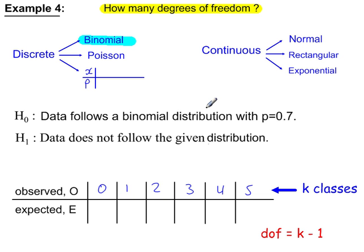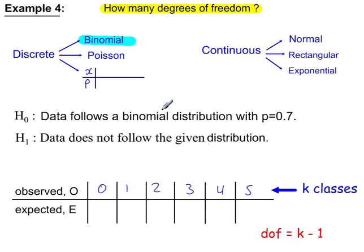Example 4: does the data follow a binomial distribution with population parameter P = 0.7? There are k classes, so k minus 1 degrees of freedom. With 6 classes, that's 5 degrees of freedom. We're testing both the binomial distribution and its assumed parameter P = 0.7.